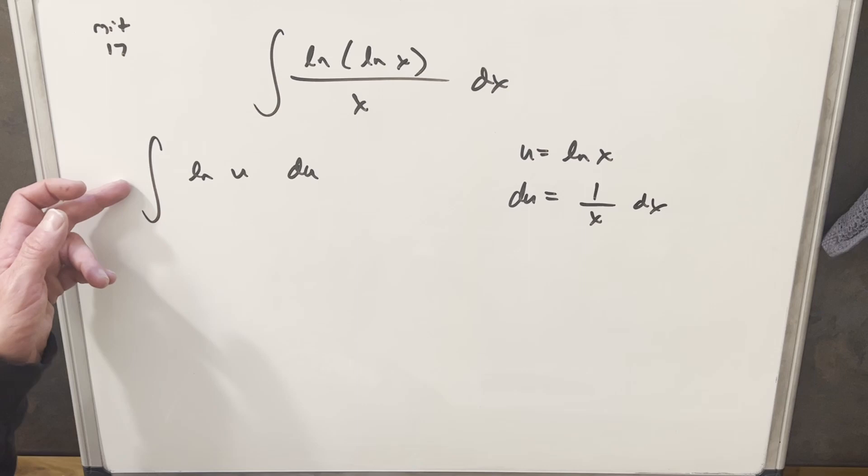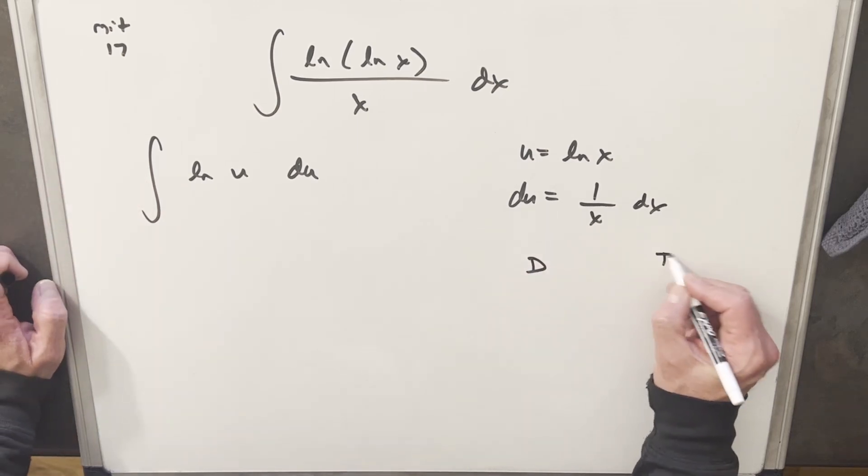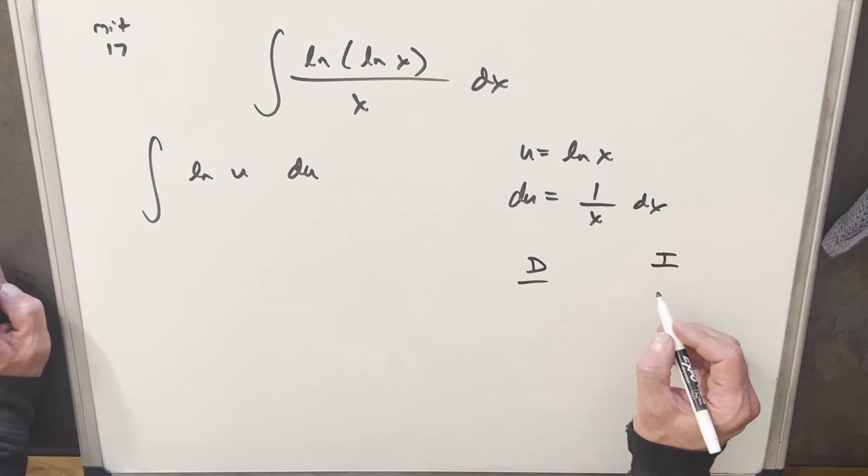Now you may have actually memorized what this integral is, natural log of u, but I think I'm just gonna do it real quick. I'm gonna use integration by parts. We'll just do the di method for this real quick.